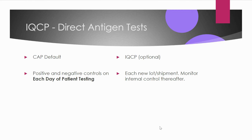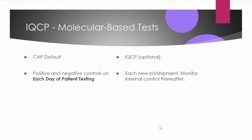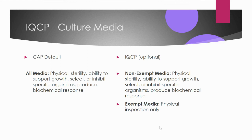If an IQCP is implemented — which is optional but saves money and staff effort — QC for direct antigen tests can be restricted to each new lot or shipment only, after which you just monitor the internal control. Similarly, for molecular-based tests like PCRs, CAP default requires positive and negative controls on each day of testing, while after implementing IQCP, QC is only required when receiving a new lot or shipment. For culture media, CAP default requires physical inspection, sterility, ability to support growth, select or inhibit specific organisms, and produce the intended biochemical response.